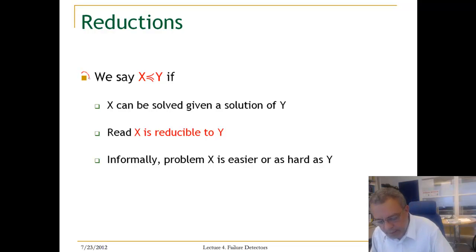So we say that a problem X is reducible to Y, if X can be solved given a solution for Y. We read X is reducible to Y, and we say that X is an easier or as hard problem as Y.